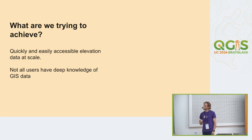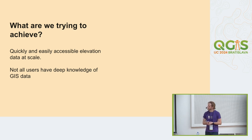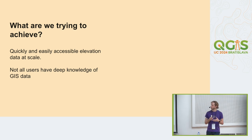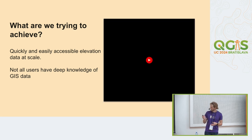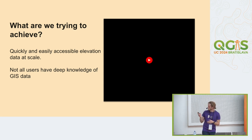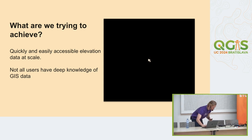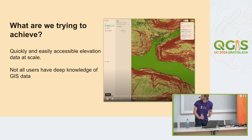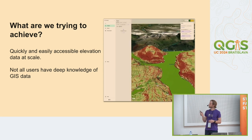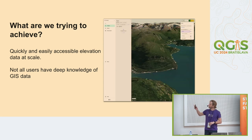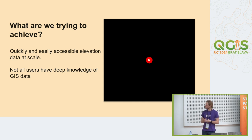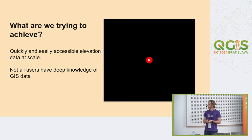What are we actually trying to achieve? We want quick, easy, and accessible elevation data at scale so our users can pan, view, and zoom around without necessarily needing deep knowledge of GIS data and the tools around it. This is a screen recording from our product where we've implemented a DEM on top of a base layer to make a 3D model with incline and elevation. This can also be achieved in QGIS — underneath it's just a display of the underlying data. We use Mapbox for this.